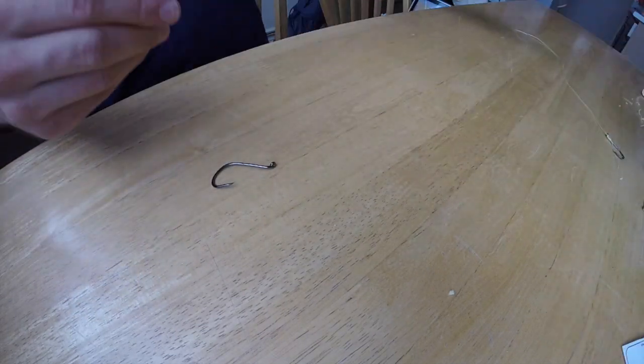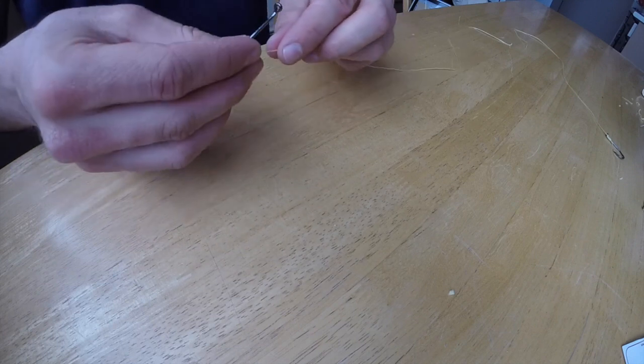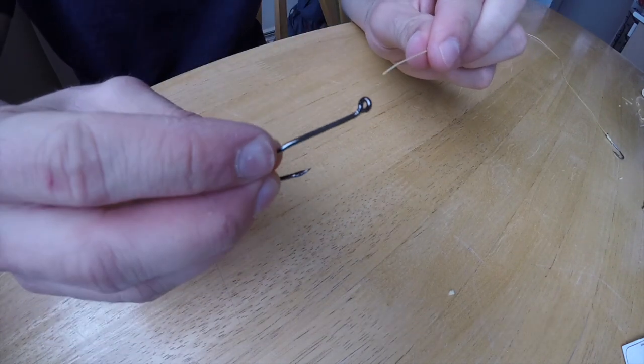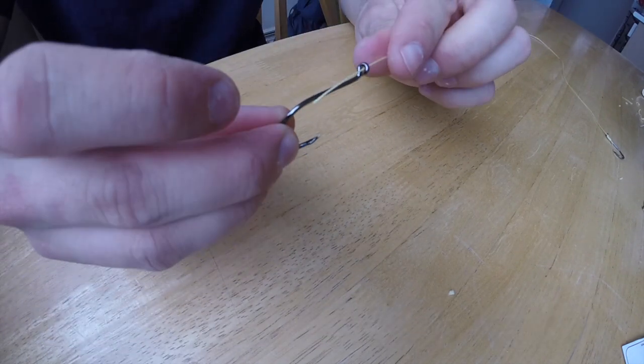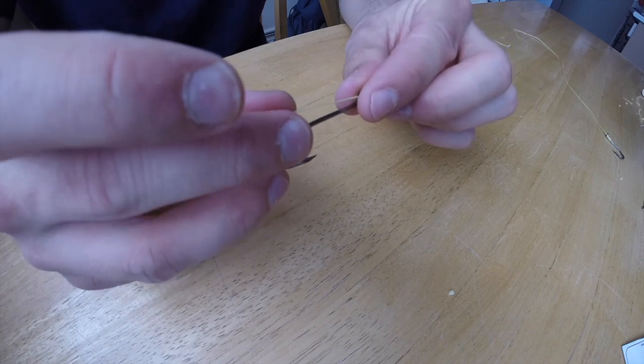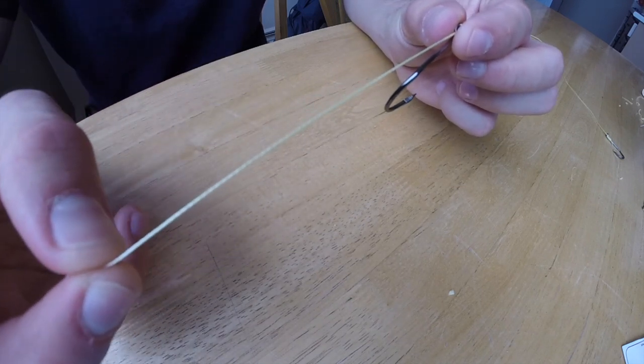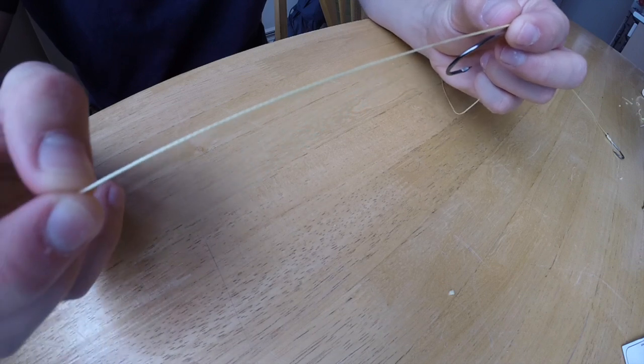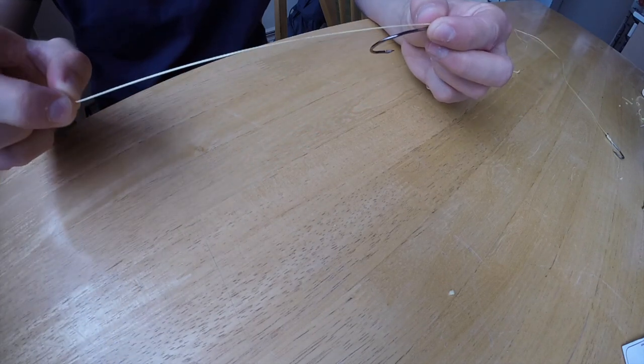So now I will show you the snell knot. You put your leader through the eye of the hook, pull it through a good three inches.